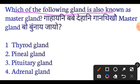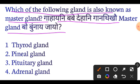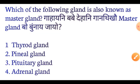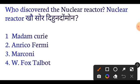Next question: Which of the following glands is also known as the master gland? The answer is the Pituitary gland. The pituitary gland is called the master gland — important.